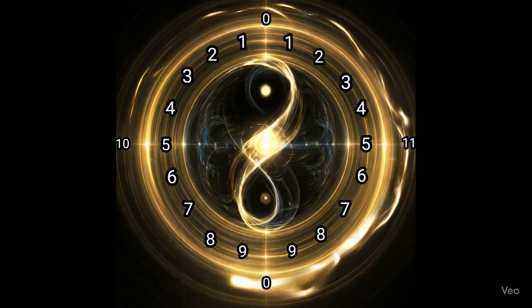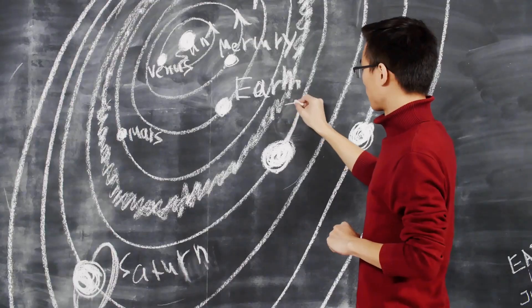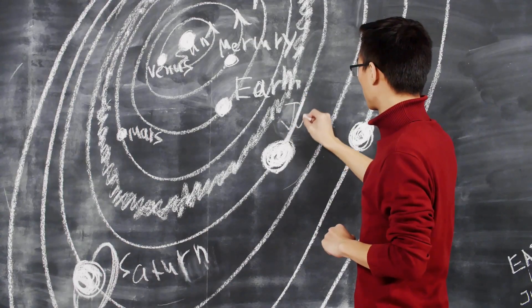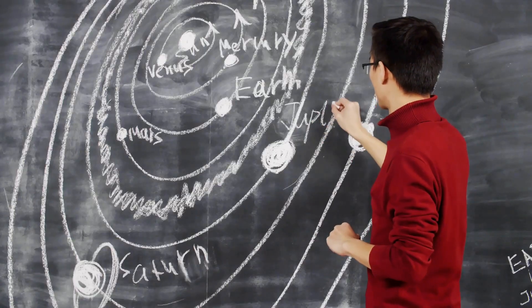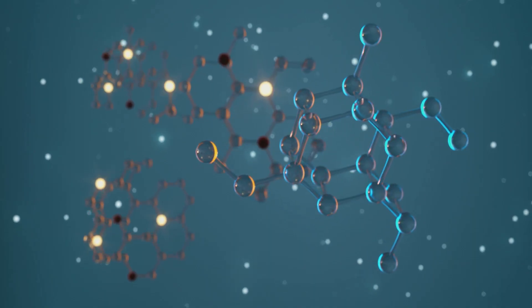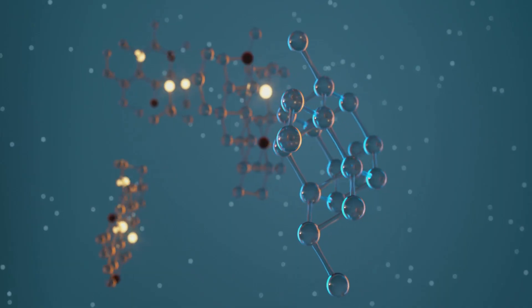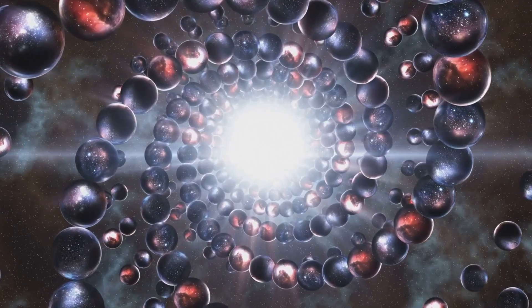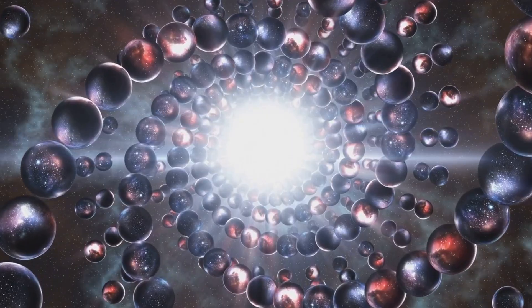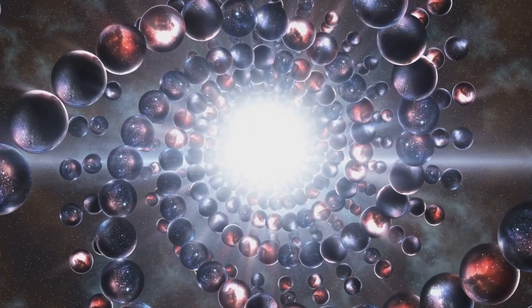So, to unlock the secret of wave function collapse, we really need to understand reality through the lens of the 11-dimensional model. In our framework, the universe isn't just atoms and void. It's actually this vibrant, interconnected fabric, all orchestrated by a hierarchy of dimensions, especially the two highest and most fundamental ones.